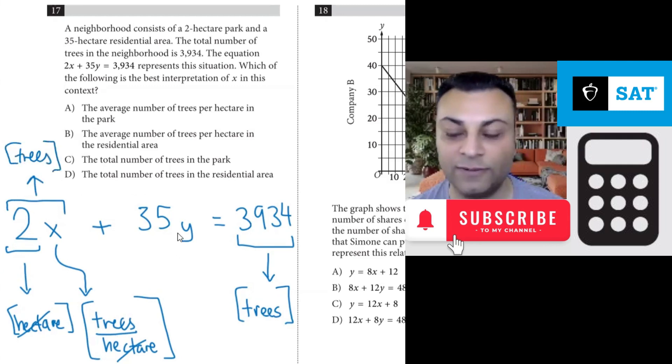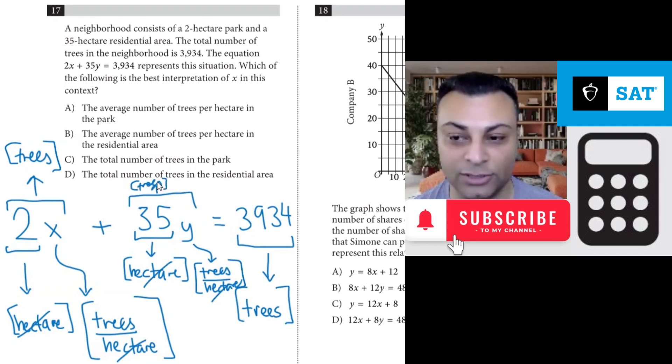The same with the 35. This 35 has a unit of hectare. It says a 35-hectare residential area. So this is hectare. So this y had better have trees per hectare in order for this entire item to have a unit of trees. I can't fit it up here, but you can see what I'm doing. This is a unit of trees. That's trees.